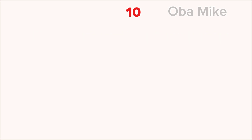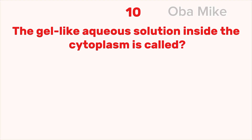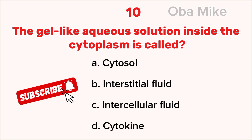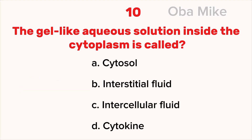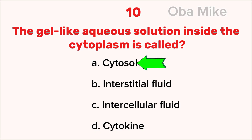10. The gel-like aqueous solution inside the cytoplasm is called A. Cytosol, B. Interstitial fluid, C. Intercellular fluid, D. Cytokine. The correct answer is A. Cytosol.